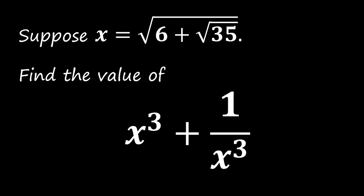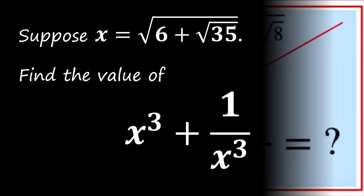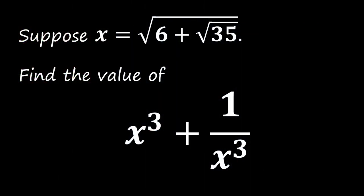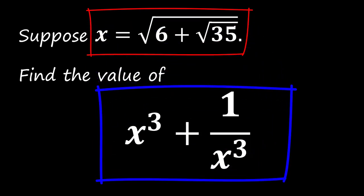Hello everyone, welcome to another exciting math problem modified from a Cambridge interview question as shown. Here is our problem today. Suppose x is square root of 6 plus square root of 35, find the value of x³ plus 1 over x³.